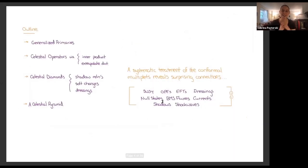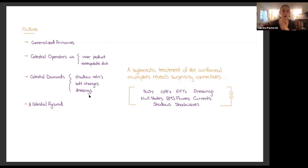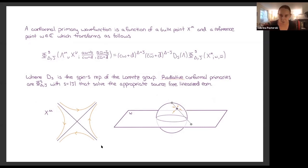The goal for my talk is to emphasize, within this conformal multiplet structure, the connections to various things that people here are talking about and working on. The outline is: we'll start with generalized primaries, then celestial operators defined via an inner product with these primaries, then moving on to the celestial diamond structure with Emilio and Andrea, and finally how they tie together into the celestial pyramid.